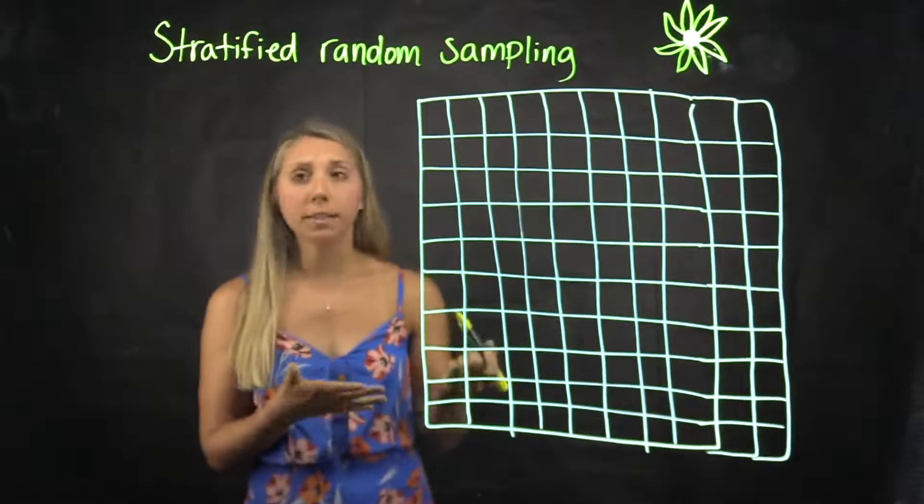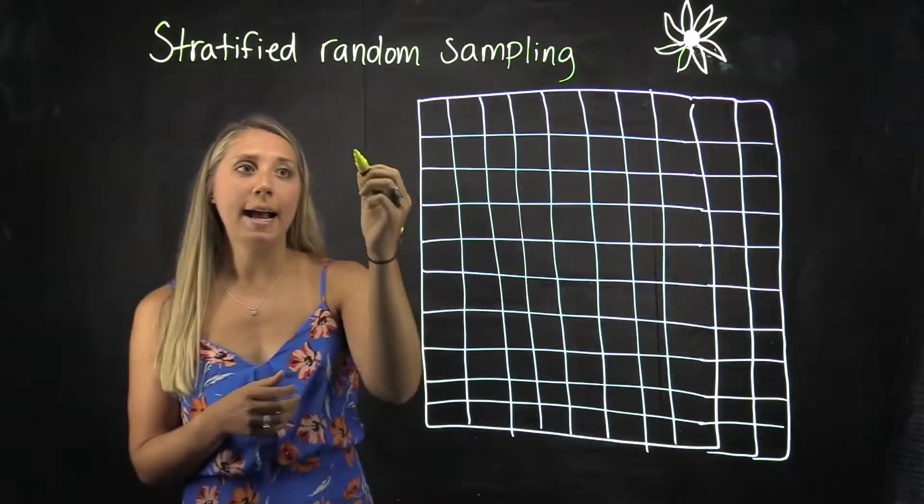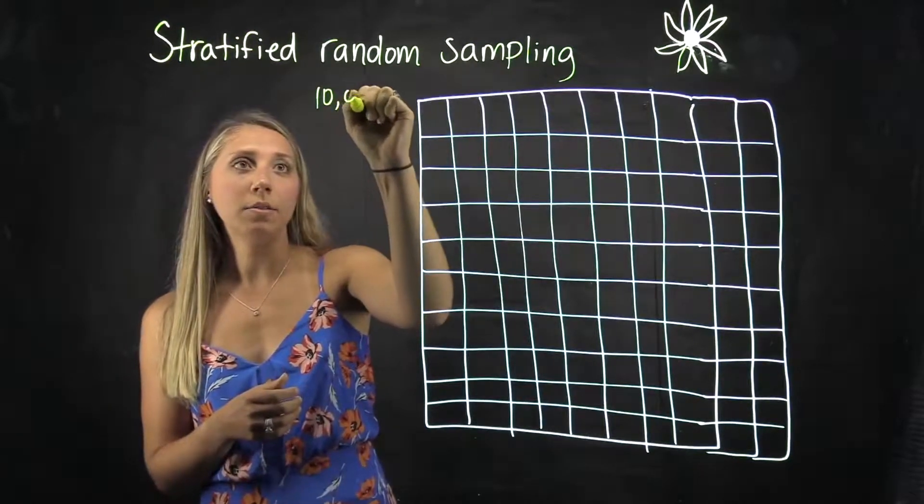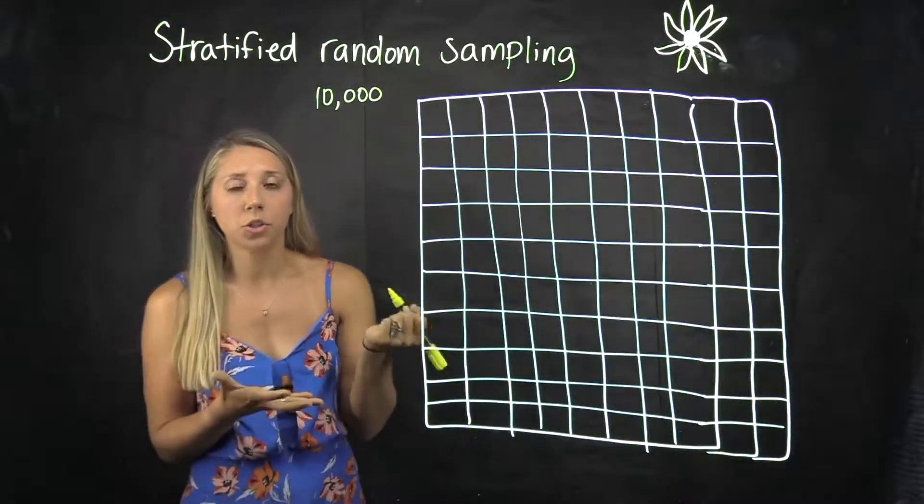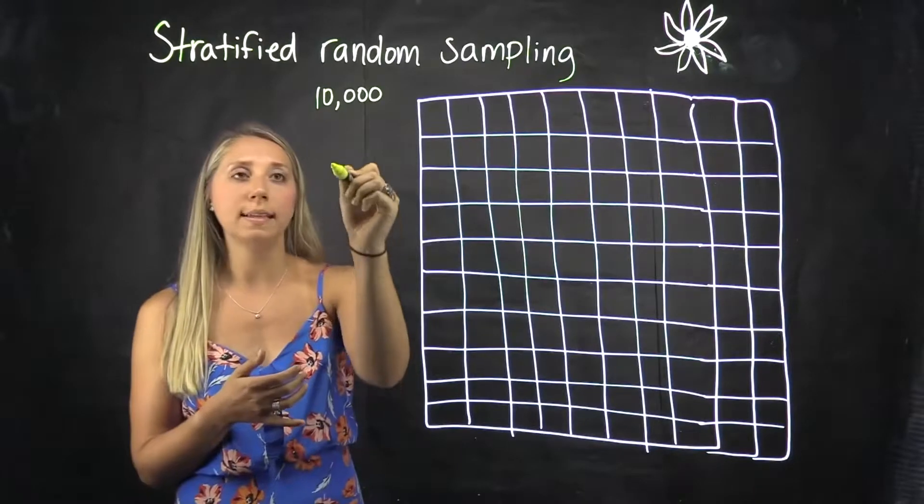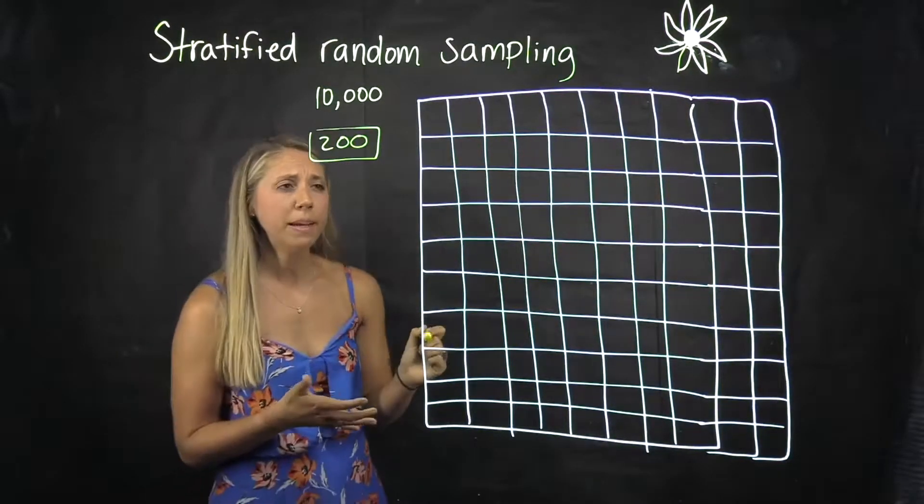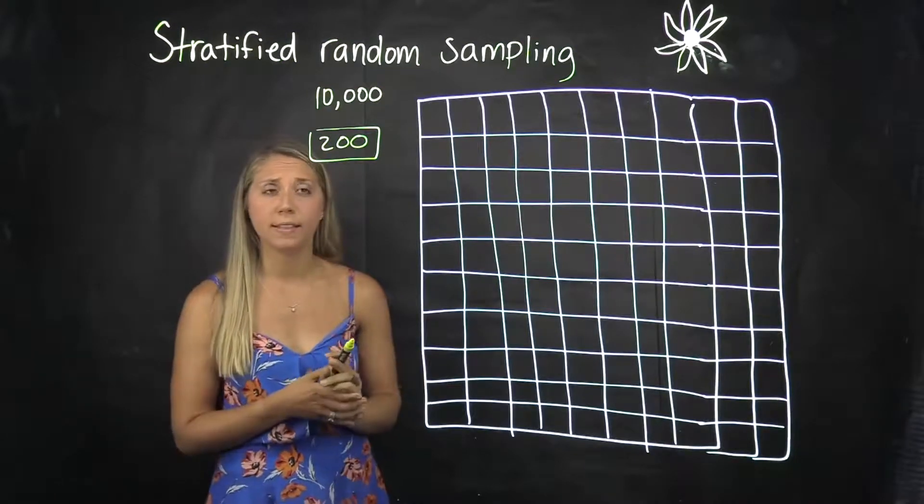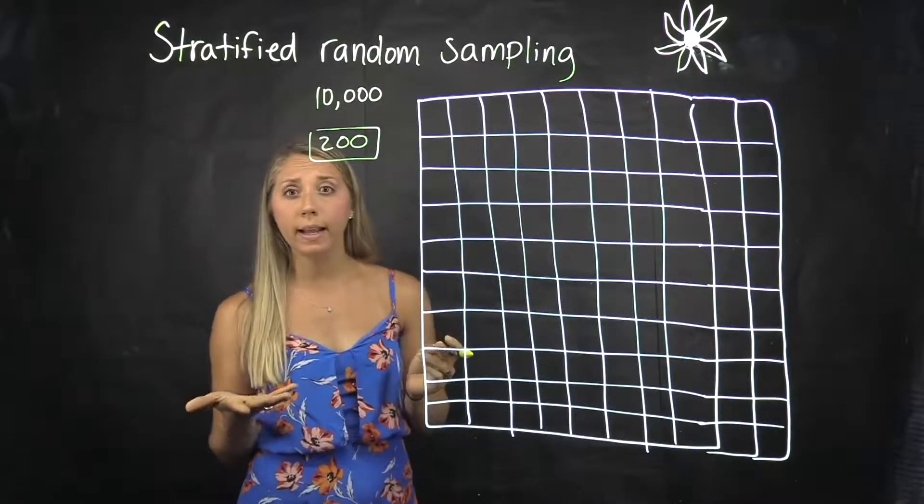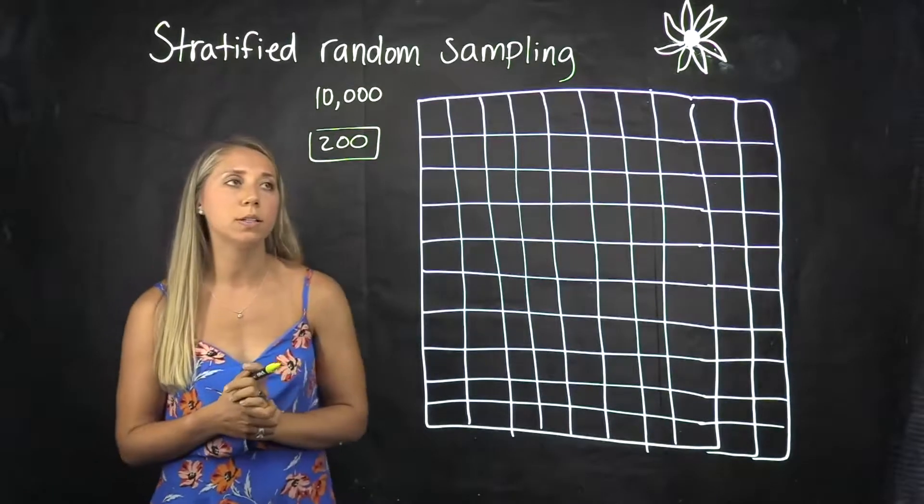Let's assume that the field has 10,000 flowers total and we only want a sample of 200 because we don't want to measure all 10,000, that would take us way too long, but we want an estimate on the average height of these sunflowers.